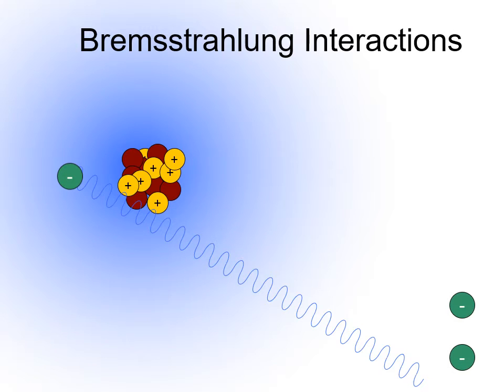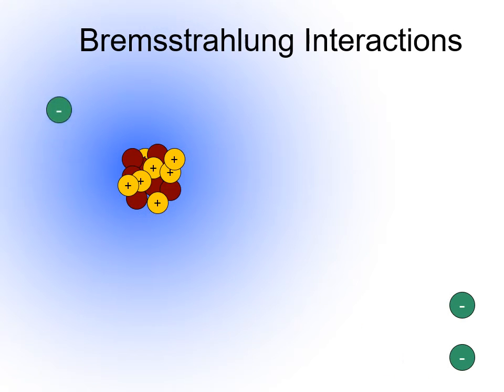The electron releases most of its energy in the form of an x-ray photon. Notice that the photon has a high energy because the electron released most of its energy during the interaction. The electron exits the nucleus with considerably less energy.